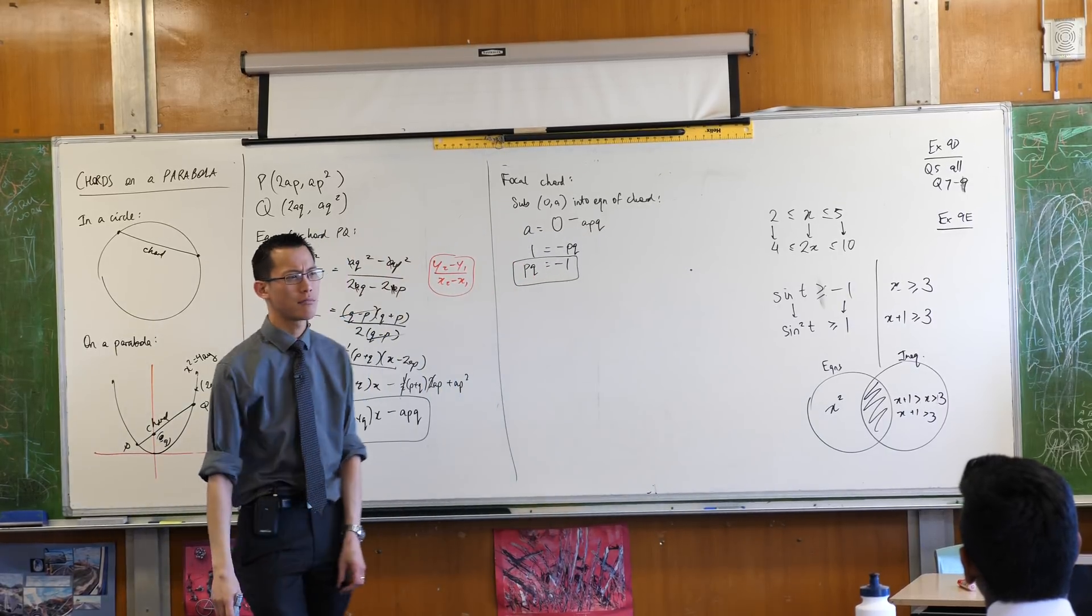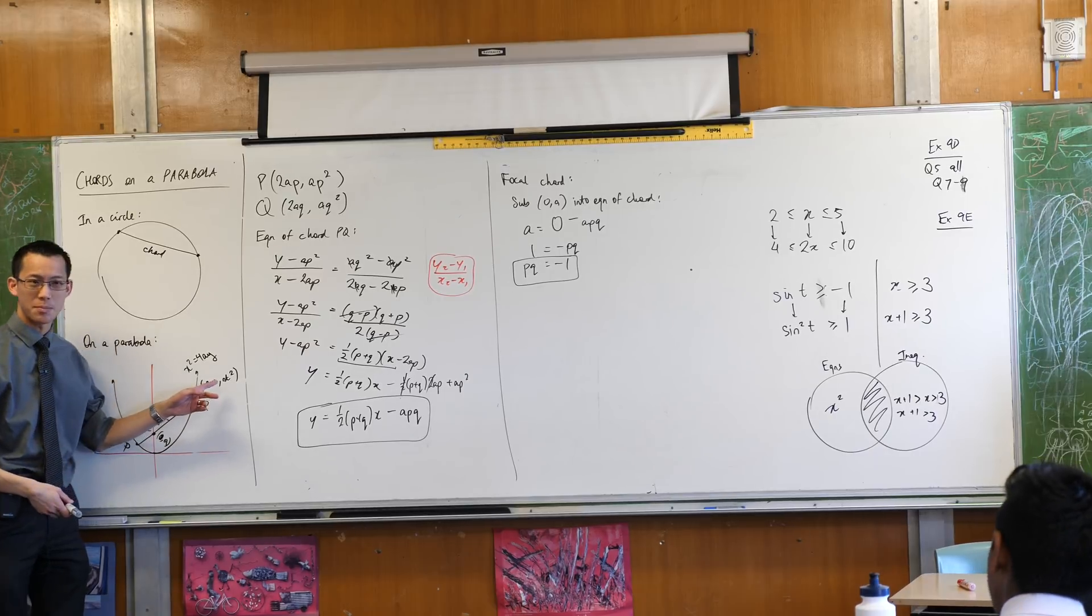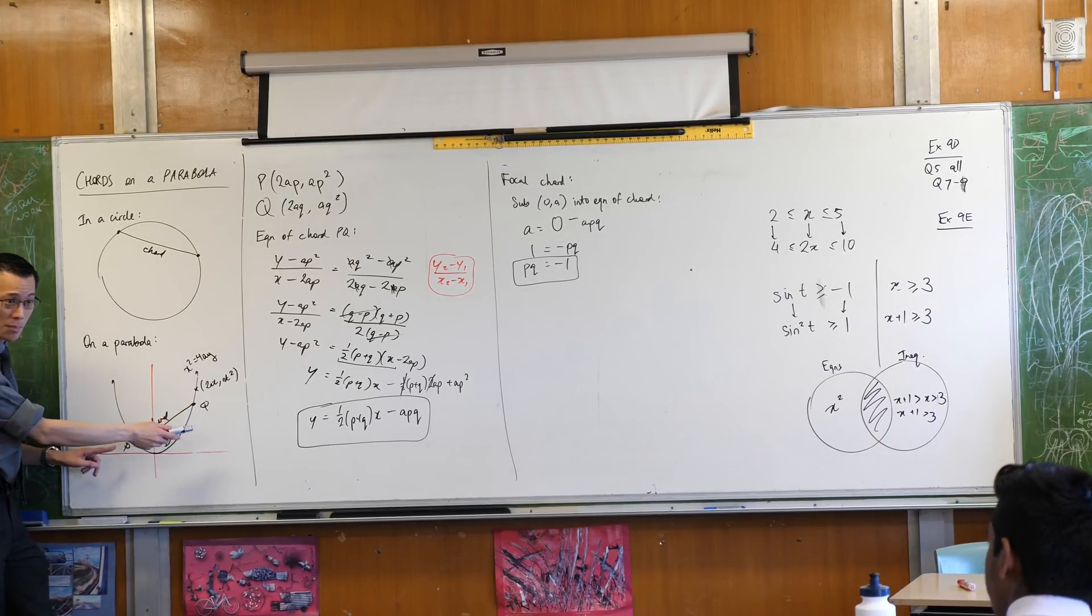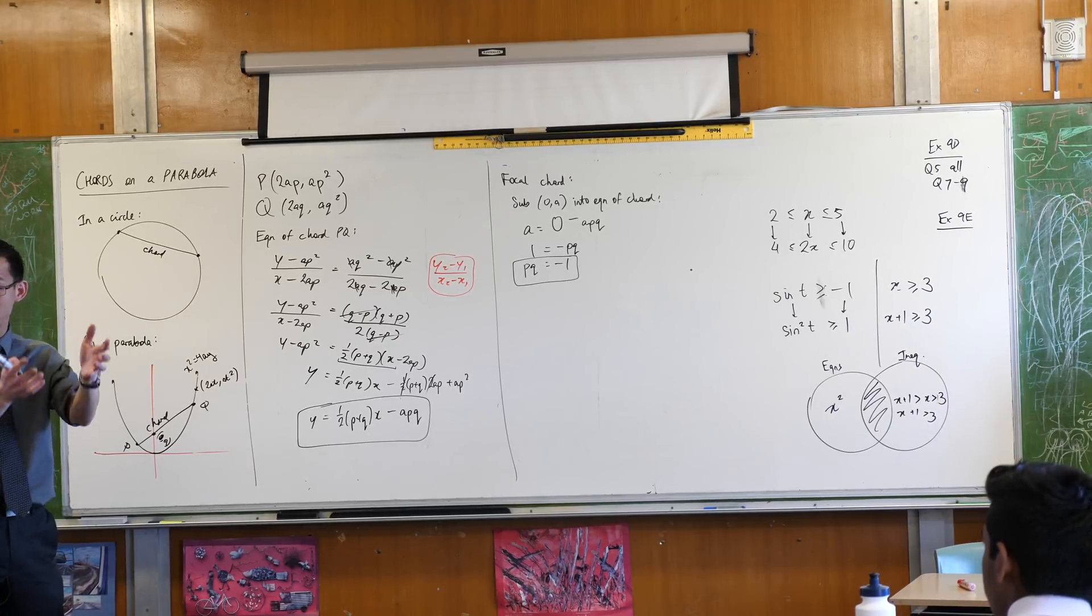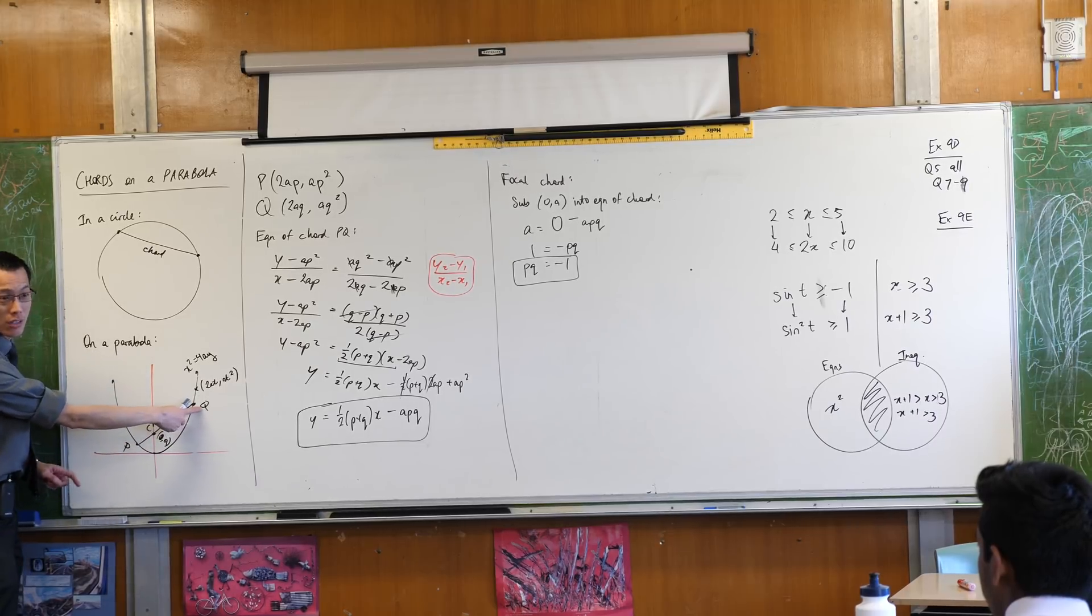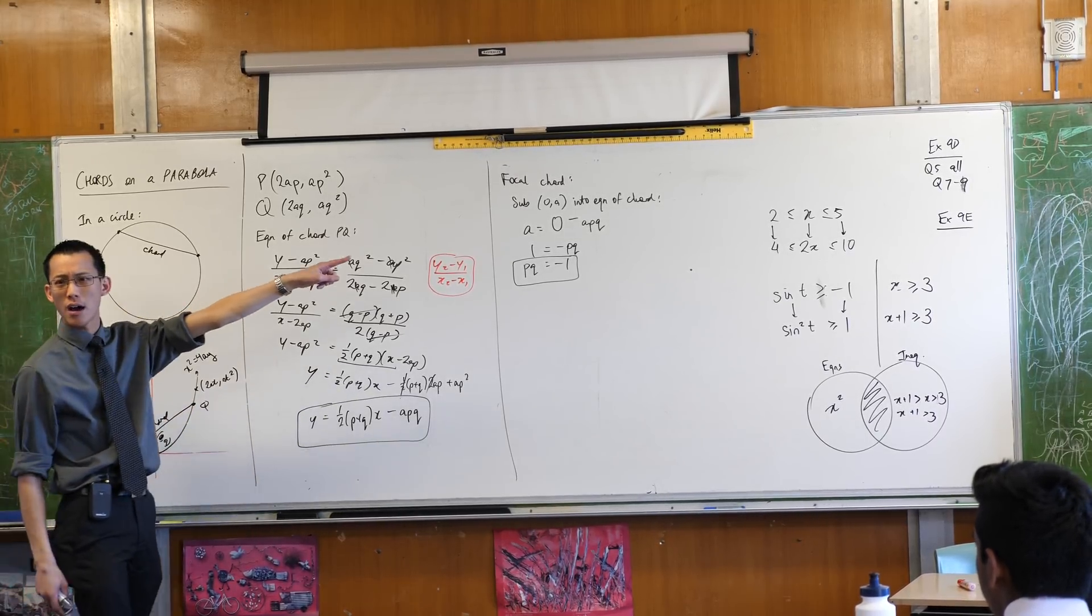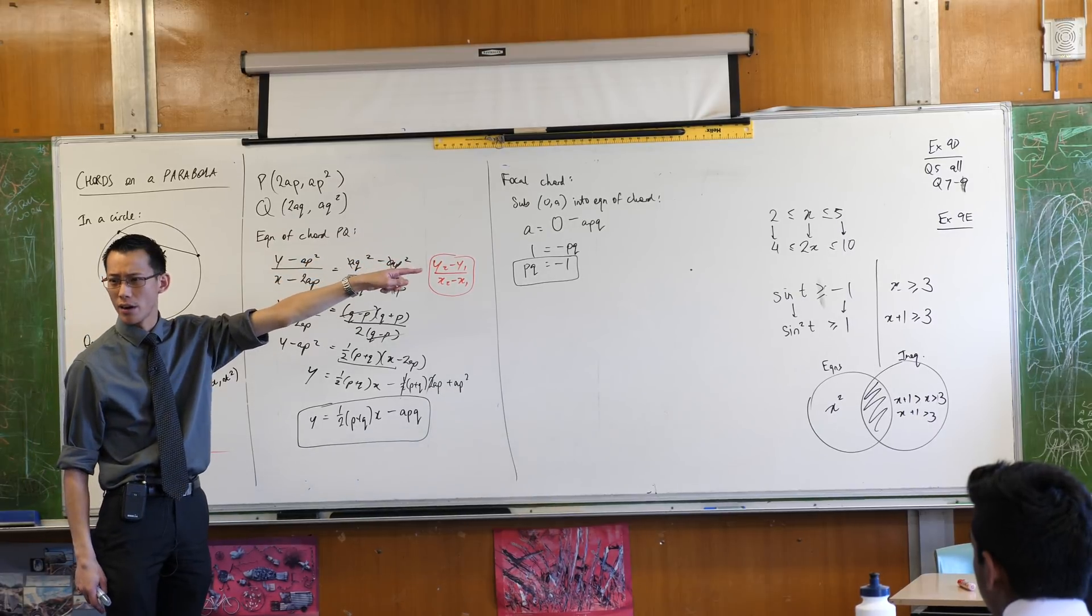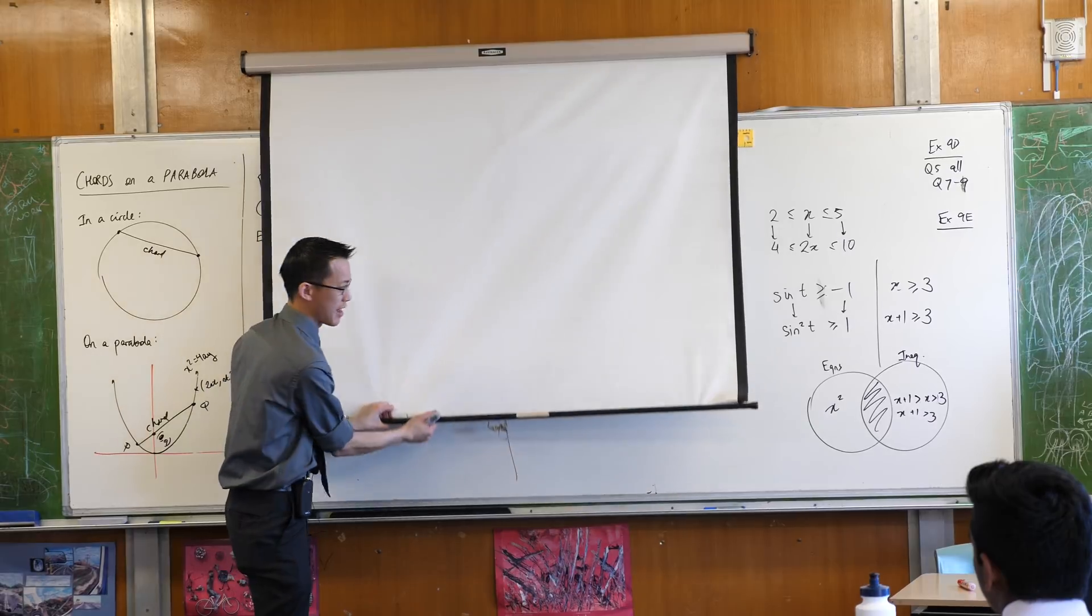What would p and q again? They're the parameters at these particular spots, aren't they? What is the parameter again? We proved this like 20 minutes ago. The parameter by definition is the gradient at that point. The gradient at that point is little q. The gradient at that point is little p. What does it mean when gradients are multiplying together to give negative 1? They're perpendicular.